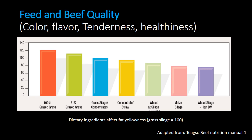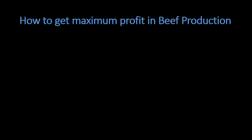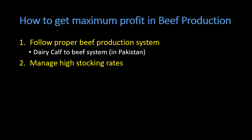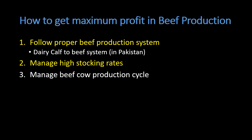How can we get maximum profit in beef production? Key points include: (1) follow a proper beef production system — in Pakistan this is mostly the dairy calf to beef system, where dairy male calves are used for beef production fed individually or in feedlot; (2) maintain high stocking rate to accommodate more animals in a small area; (3) manage the beef cow production cycle to ensure a steady number of animals; and (4) minimize feed cost.